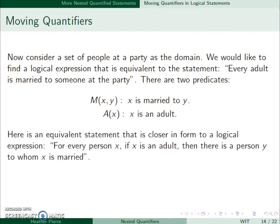Let's consider the equivalent statement that is closer in a form of logical expression. For every person x, if x is an adult, then there is a person y to whom x is married. So this is saying the same thing as 'every adult is married to someone at the party,' just a little closer to logic.